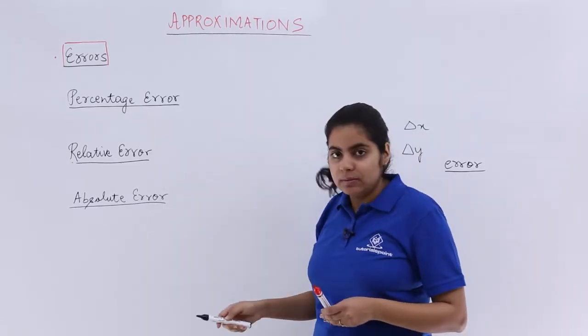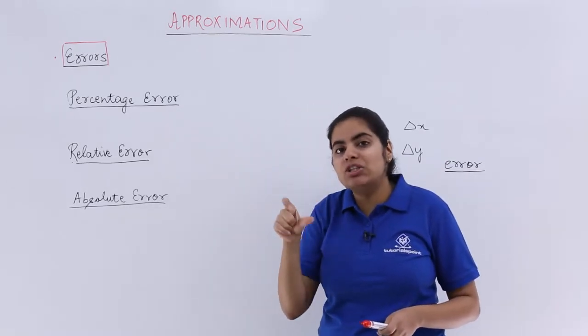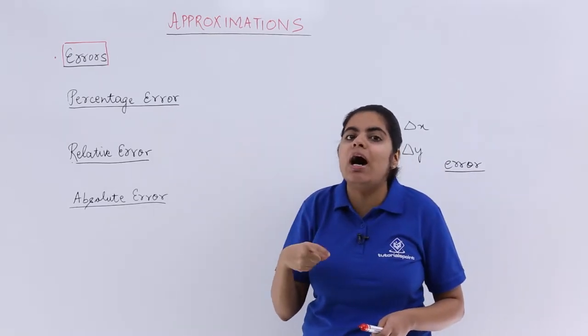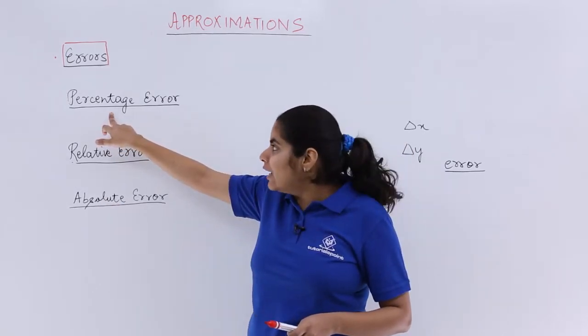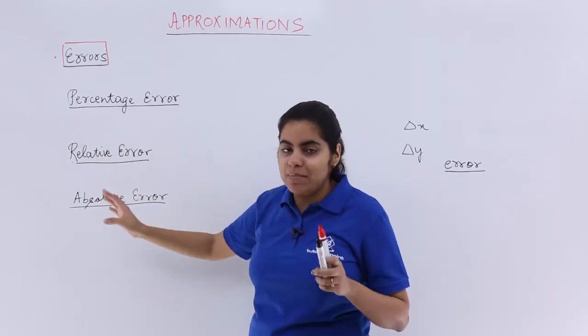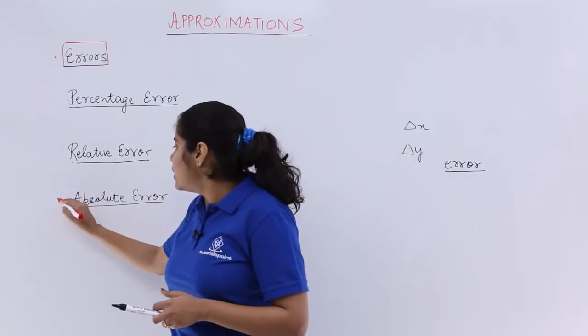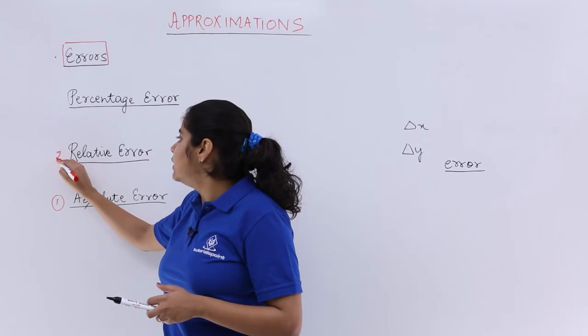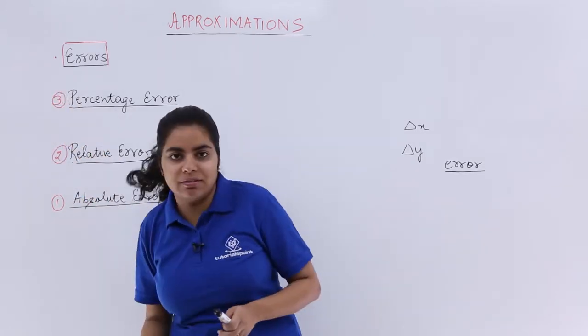Now there are three types of error. I have written in the order which you have actually understood and which you are familiar with. You are more familiar with the word percentage and you are least familiar I guess with the word absolute and relative. So I have written in that order but to study we will be first studying absolute, then studying relative, and then studying percentage error.